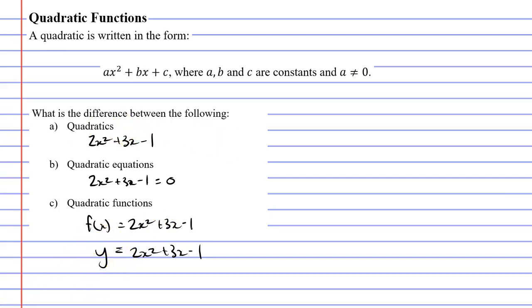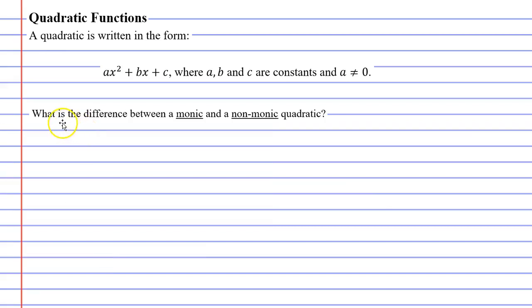Now to finish off, we have one last question. What is the difference between a monic and a non-monic quadratic? So first of all, what does the word monic mean? Well, it basically means one. And when we talk about monic quadratics, we mean that a will equal 1. It really doesn't matter what b or c will equal.